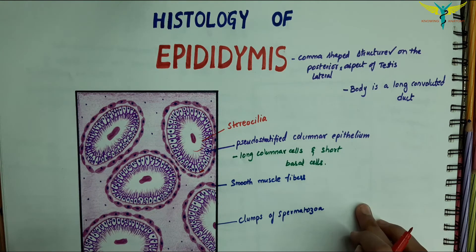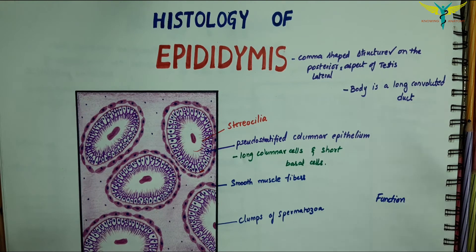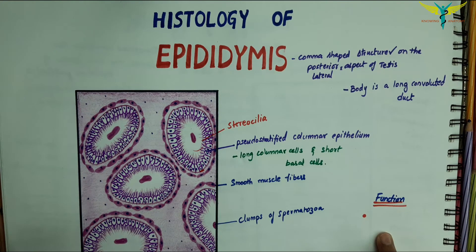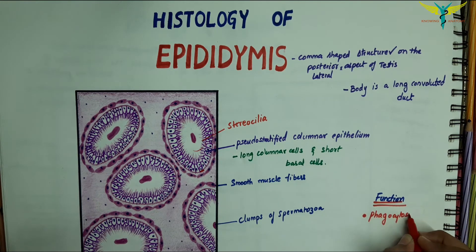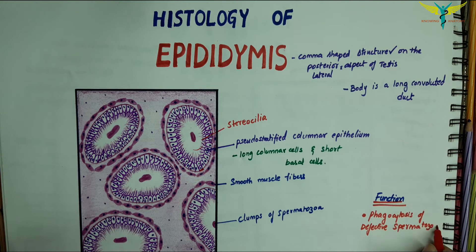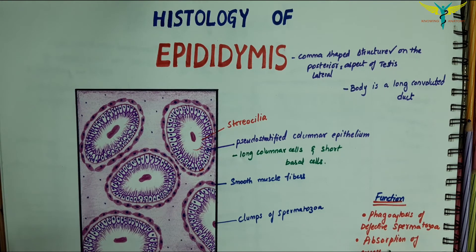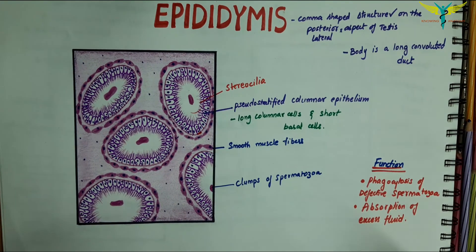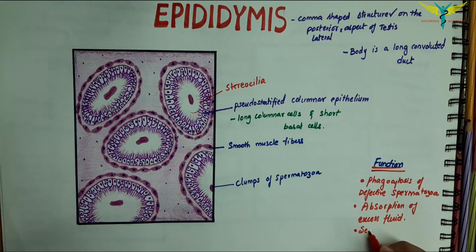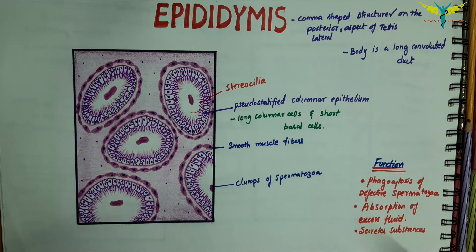Now let's talk about the functions of the epididymis. It helps in the phagocytosis of defective spermatozoa, helps in the absorption of excess fluid, and helps in the secretion of substances that play a role in the maturation of the sperms.